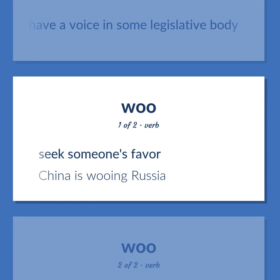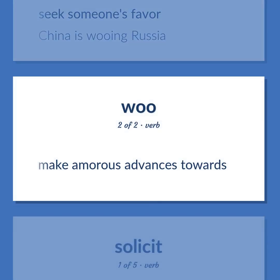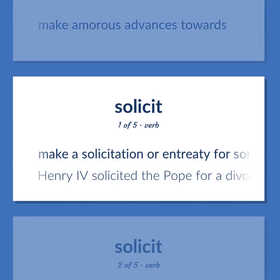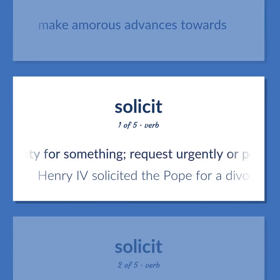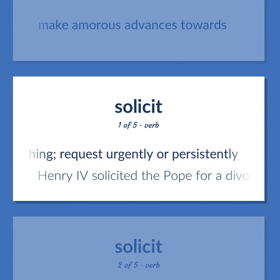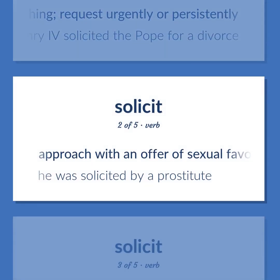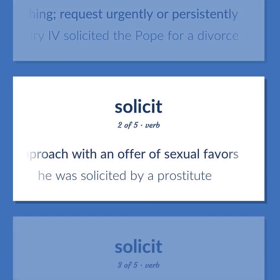Woo: Seek someone's favor. China is wooing Russia. Make amorous advances towards. Solicit: Make a solicitation or entreaty for something; request urgently or persistently. Henry IV solicited the Pope for a divorce. Approach with an offer of sexual favors. He was solicited by a prostitute.